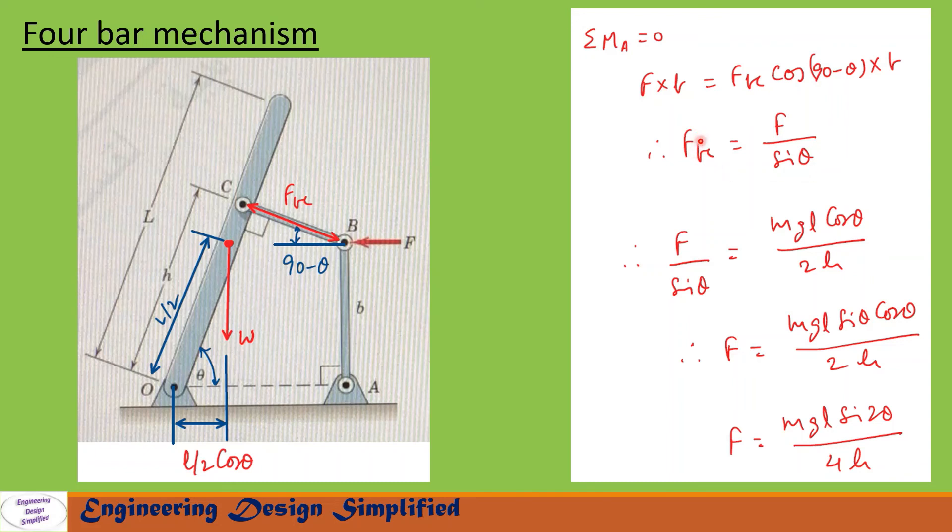In the previous slide we saw FBC equals mgl cos theta by 2h. Let us equate the previous equation to this equation. So we get F by sin theta equals mgl cos theta by 2h. After rearranging, we can write F equals mgl sin theta cos theta by 2h. We can further simplify this as F equals mgl sin 2 theta by 4h, since sin theta cos theta equals sin 2 theta by 2.